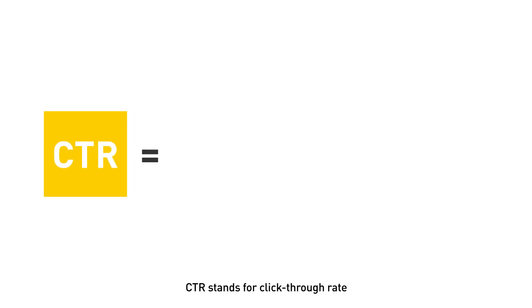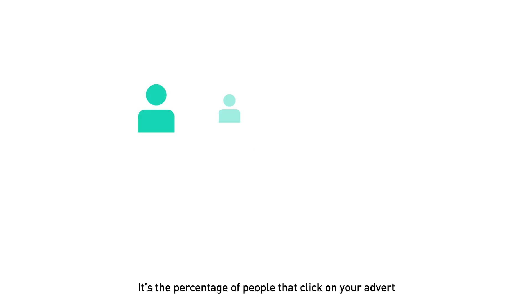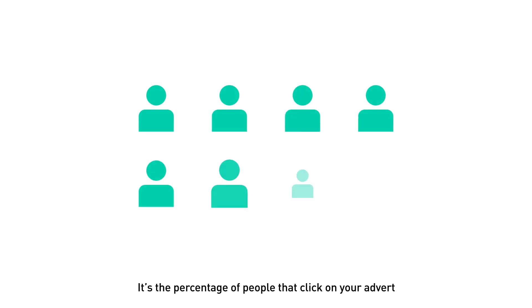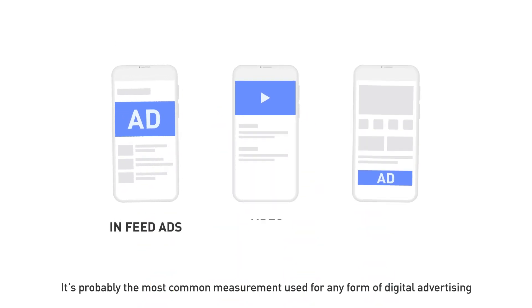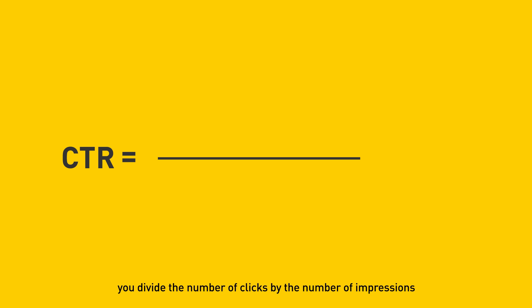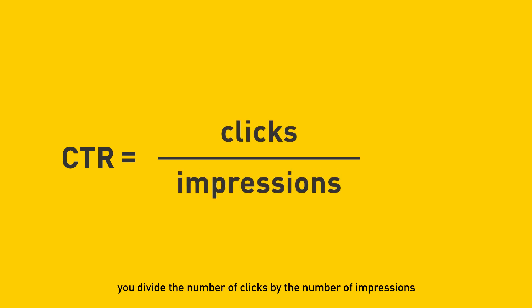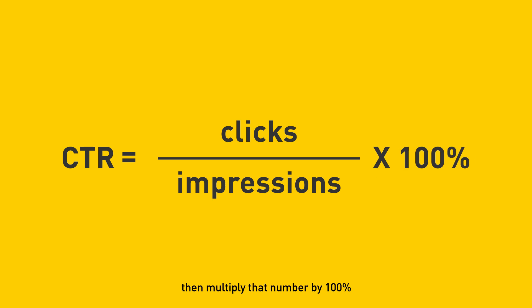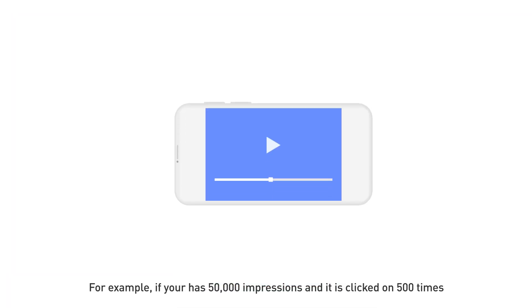CTR stands for click-through rate. It's the percentage of people that click on your advert, and it's probably the most common measurement used for any form of digital advertising. Similar to the calculation of CVR, you divide the number of clicks by the number of impressions, then multiply that number by 100%.